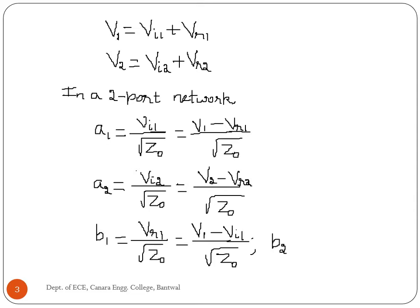The reflected wave at port 2, B2, is equal to the reflected voltage at port 2 divided by root Z0. The reflected voltage at port 2 is equal to the total voltage at port 2 minus the incident voltage at port 2. Here A1 and A2 represent normalized incident waves, and B1 and B2 represent normalized reflected waves at the corresponding ports.